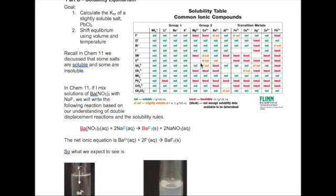For example, if I were to mix barium nitrate with sodium fluoride, in Chem 11, I will write my reaction as shown, which is a double displacement reaction, and then I would predict my products to be barium fluoride and sodium nitrate. Using the solubility rules, I can categorize the barium fluoride as insoluble. We can further write the net ionic equation, which removes all the spectator ions as barium ion plus two fluoride ions forming barium fluoride.